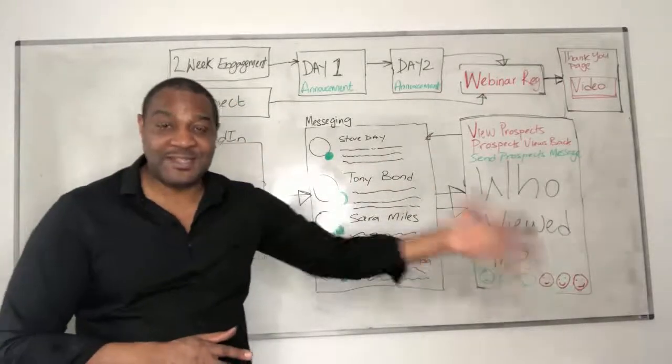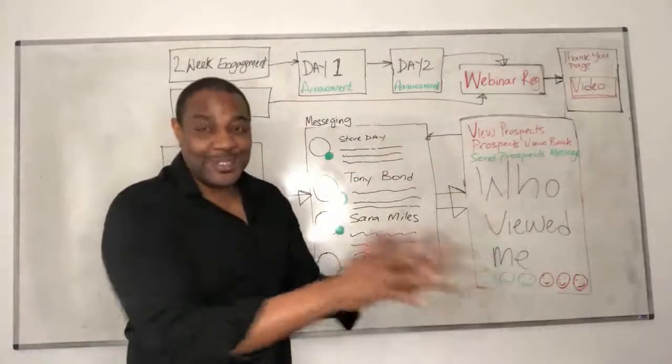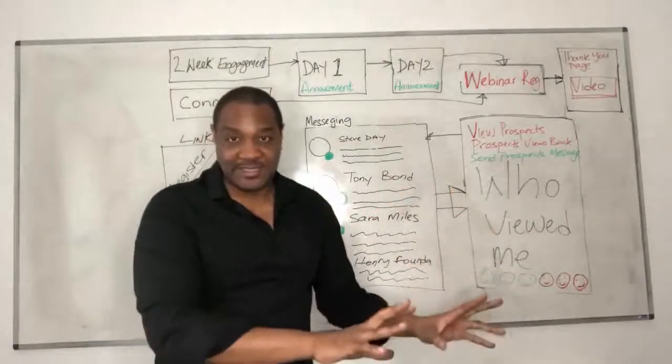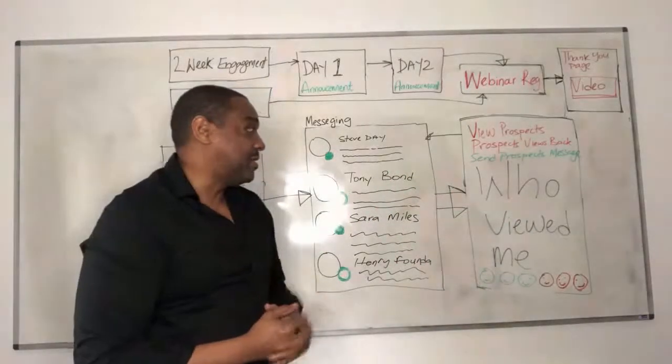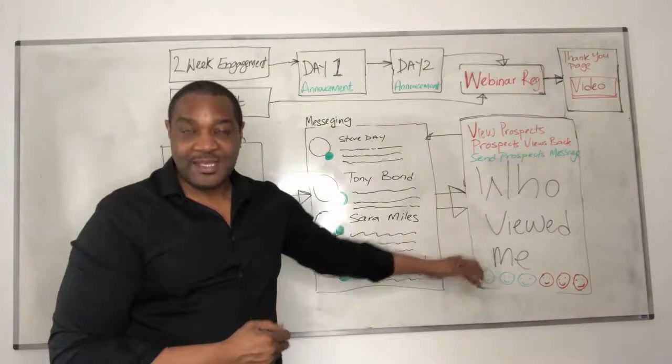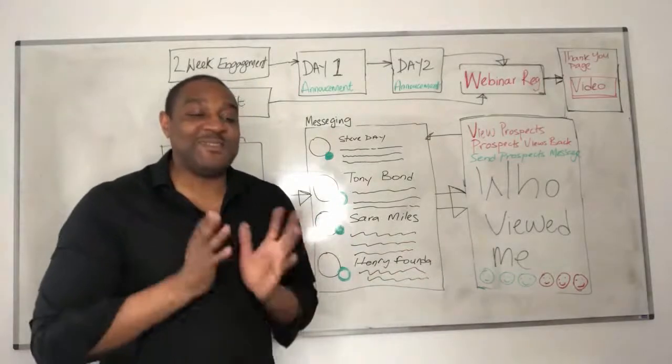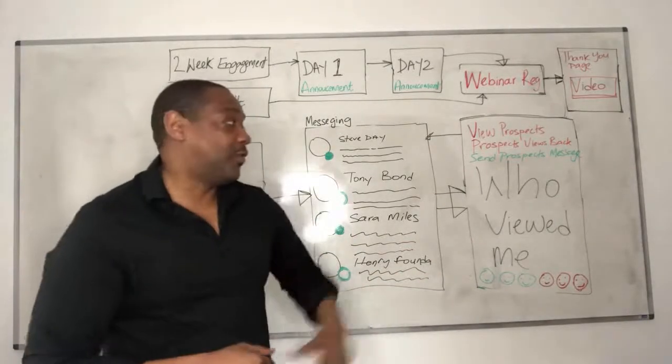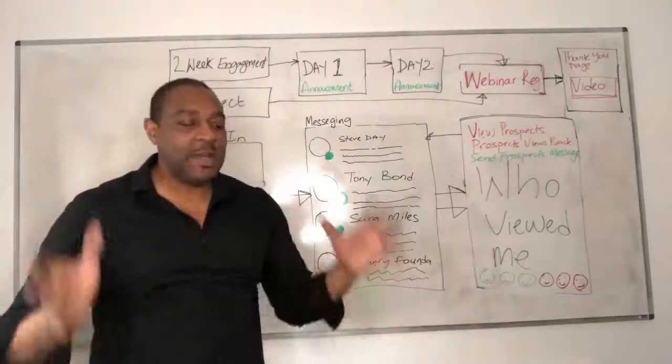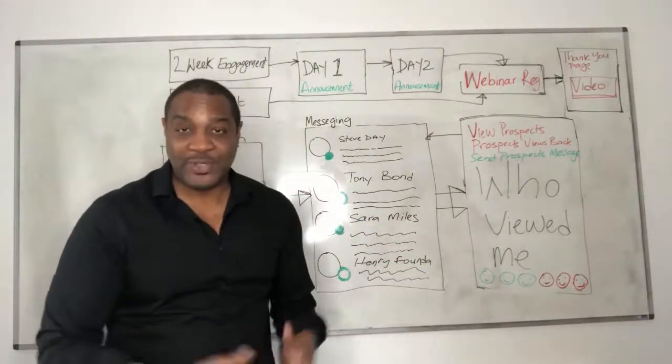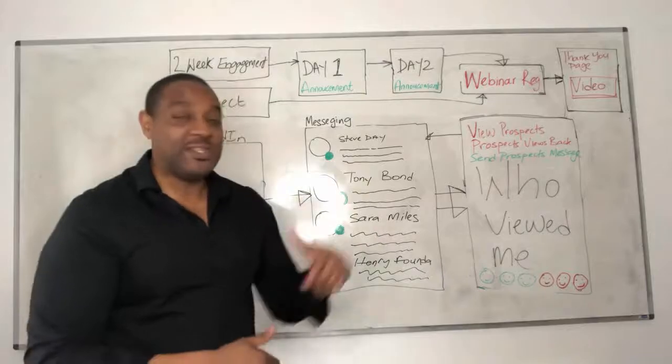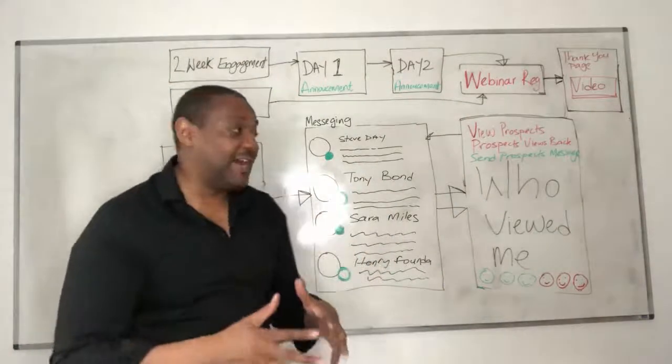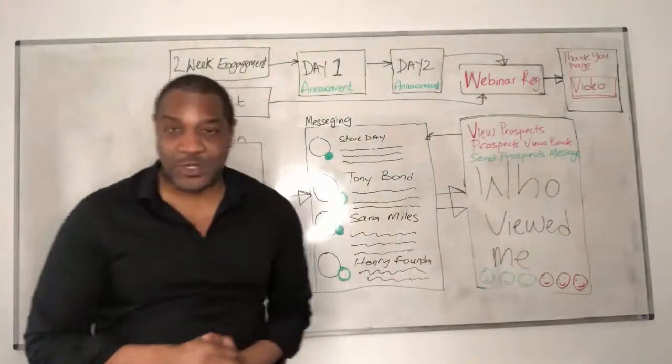This who viewed me is so powerful. You go view your prospects. They view you back, but now you pounce. I use the word pounce, but you're going to communicate. You start that conversation going. This is very powerful stuff guys. And we've got specific messages for who viewed me. We've got over 70. I mean, we're increasing that all the time. We're trying to really test these messages all the time, but within the funnel program, we do have messages for this as well.